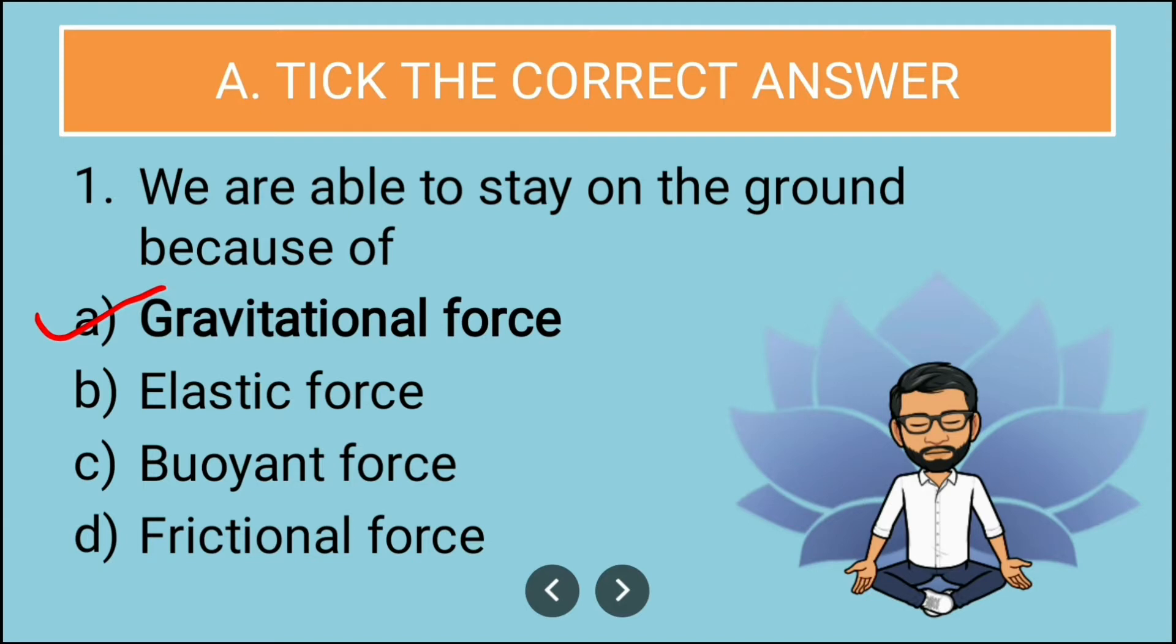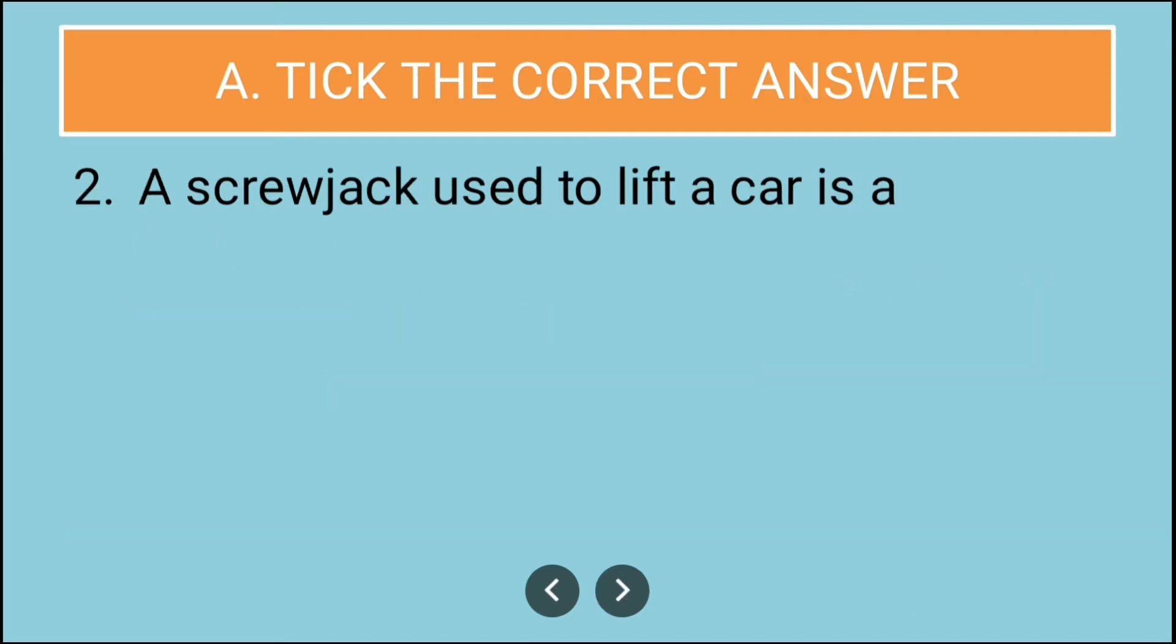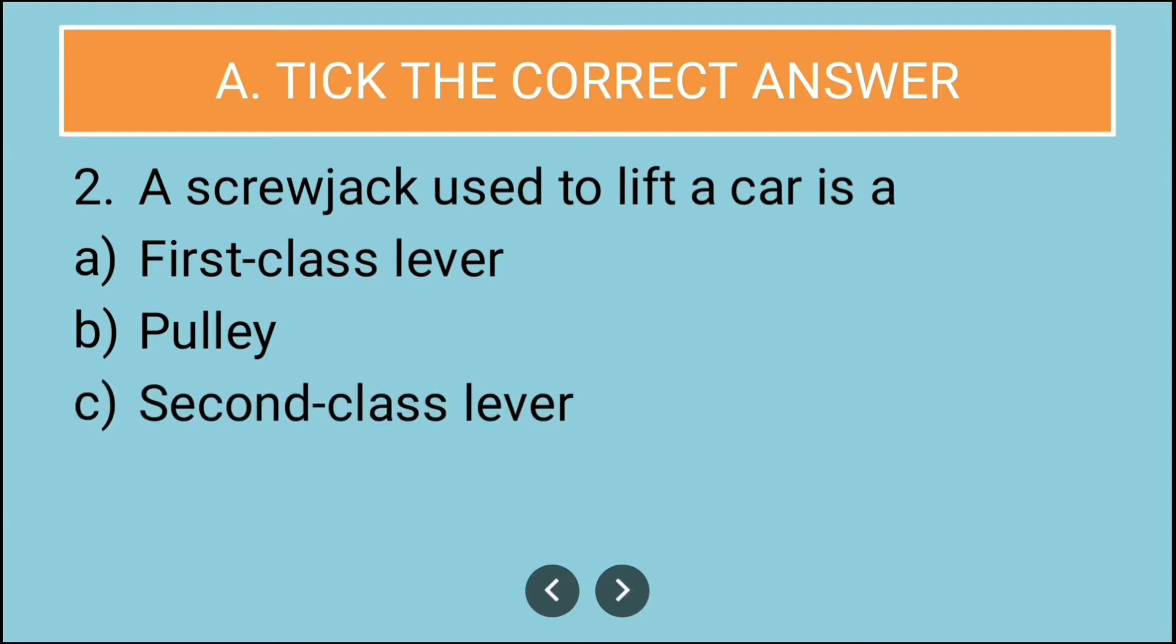Let us see next question. A screw jack used to lift a car is a: options first class lever, B pulley, C second class lever and D is screw. So what do you think is the correct answer? Well, this name itself suggests an answer. It gives you a hint of answering this question.